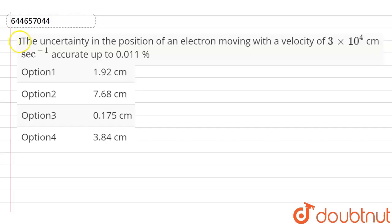Here is the question in which the uncertainty in the position of an electron moving with a velocity of 3 × 10^4 cm per second, accurate up to 0.011%. Option 1: 1.92 cm, Option 2: 7.68 cm, Option 3: 0.175 cm, and Option 4: 3.84 cm.